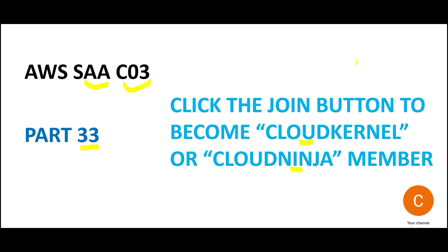Those questions are important because you will need them to clear your certifications. Cloud Ninja is for advanced certifications like AWS Solutions Architect Professional and AWS Data Analytics. Cloud Kernel is for basic and intermediate certifications like Cloud Practitioner, AWS Solutions Architect Associate, GCP Data Engineer, and AZ-900 from Azure.